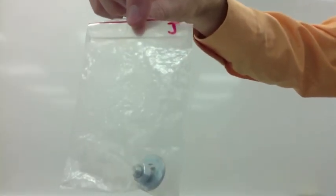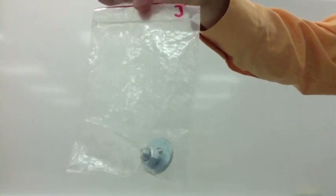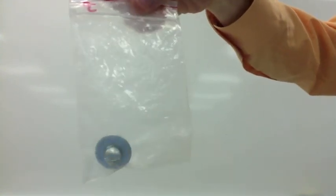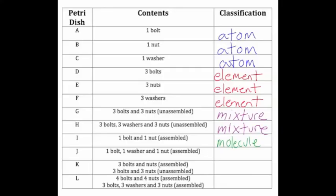Bag J has a bolt, washer, and a nut all in the same bag, and they are attached together — they're assembled. J is also a molecule, or a compound, but it's made up of three atoms.